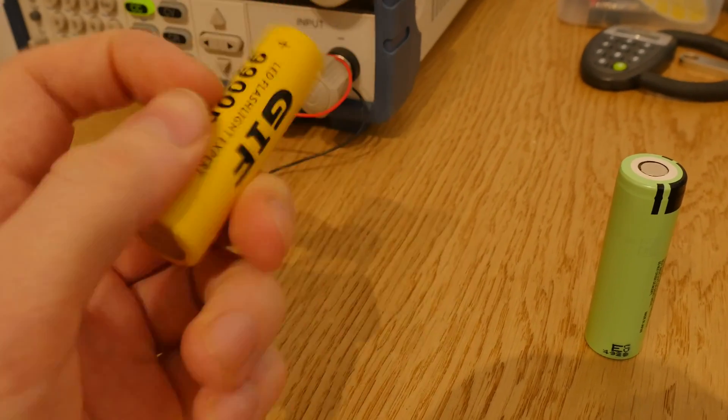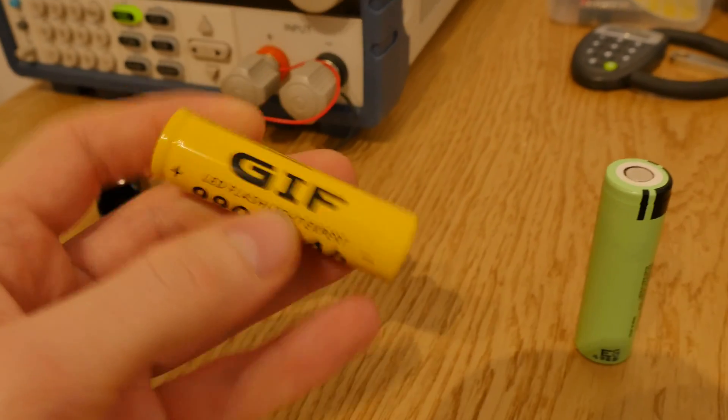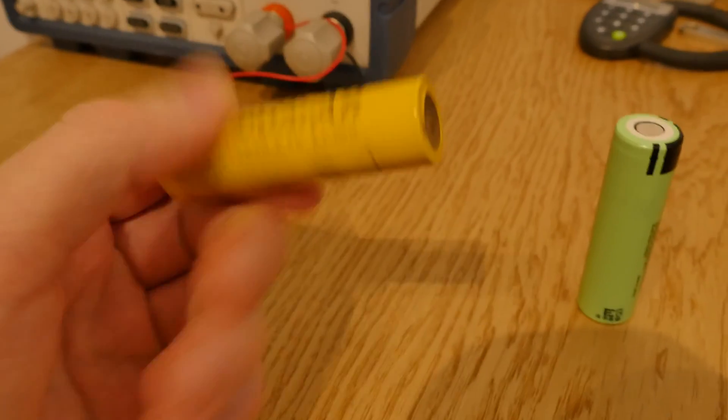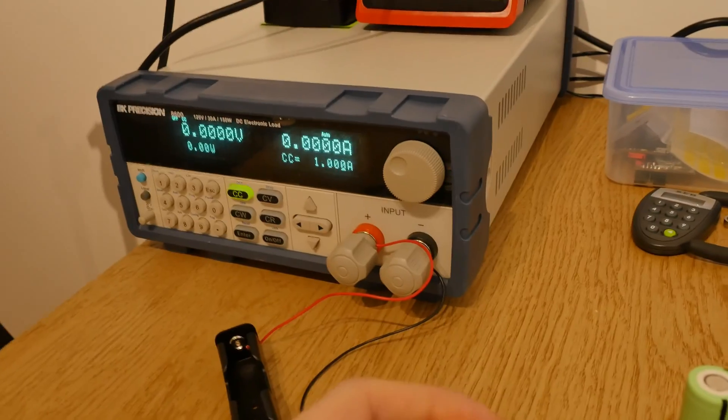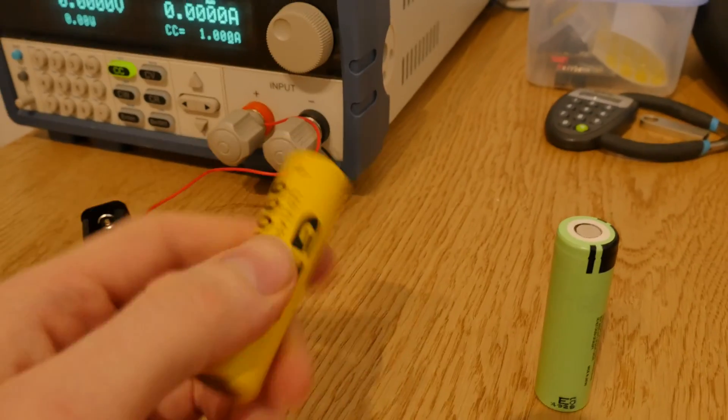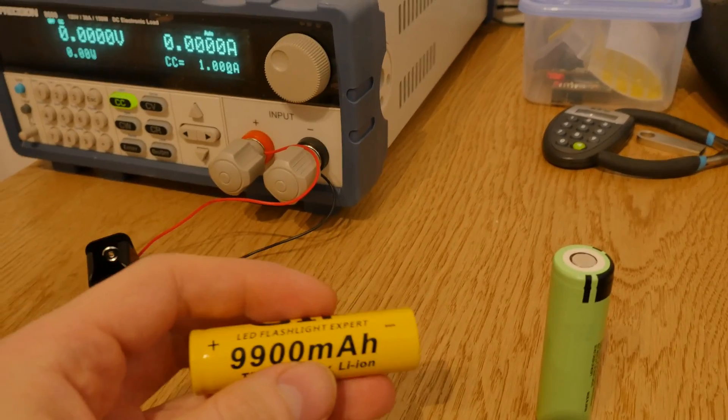basically measure the milliamp hours at cutoff voltage at 1 volt. So this is more than the battery should be run but I want to know how many amp hours there is. So I will connect this to this machine and have this electronic load and we will test it. So let's start time-lapse.